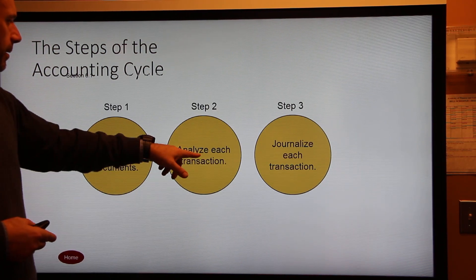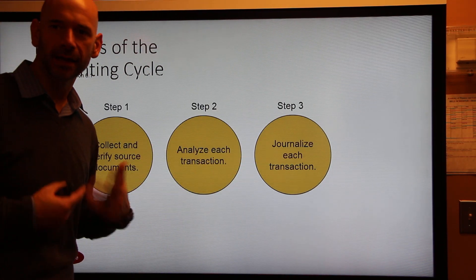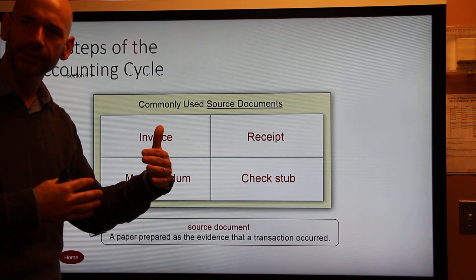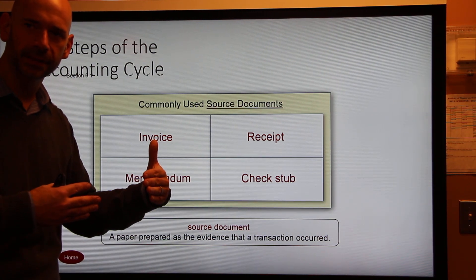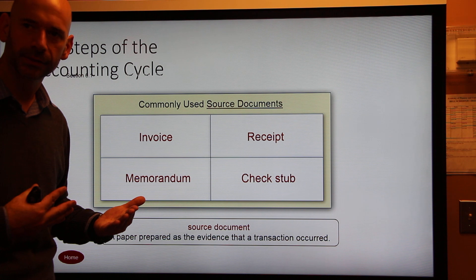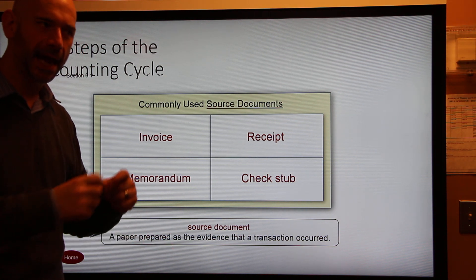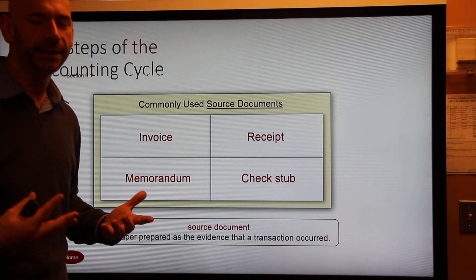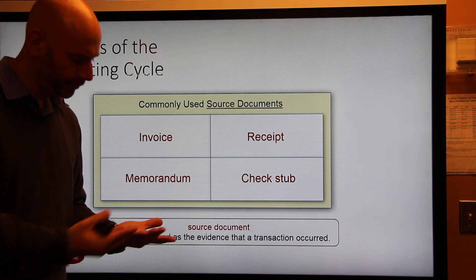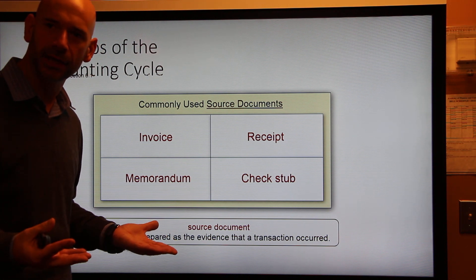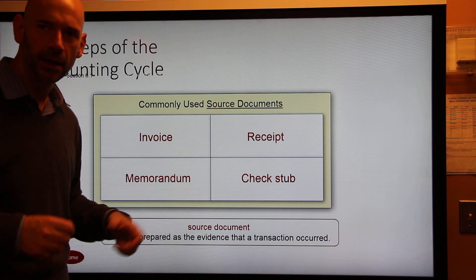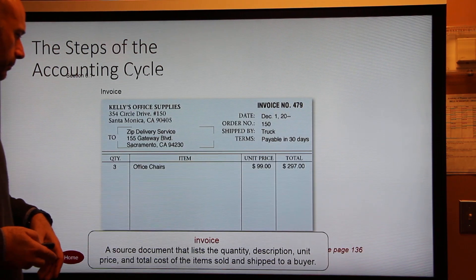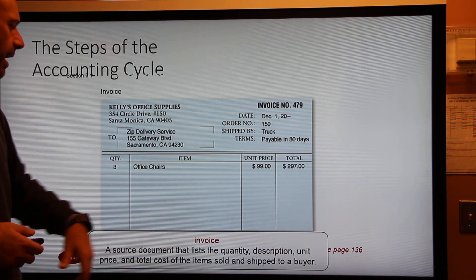The three first steps are: collect, analyze, and then journalize. Let's talk about source documents. Source documents are simply documents you get inside your business that tell you what transactions took place. In our textbooks they're written out for us, but in the real world you have source documents on your desk — invoices, receipts, memorandums, and check stubs — and you read through them to get all the information needed to properly record your transactions.